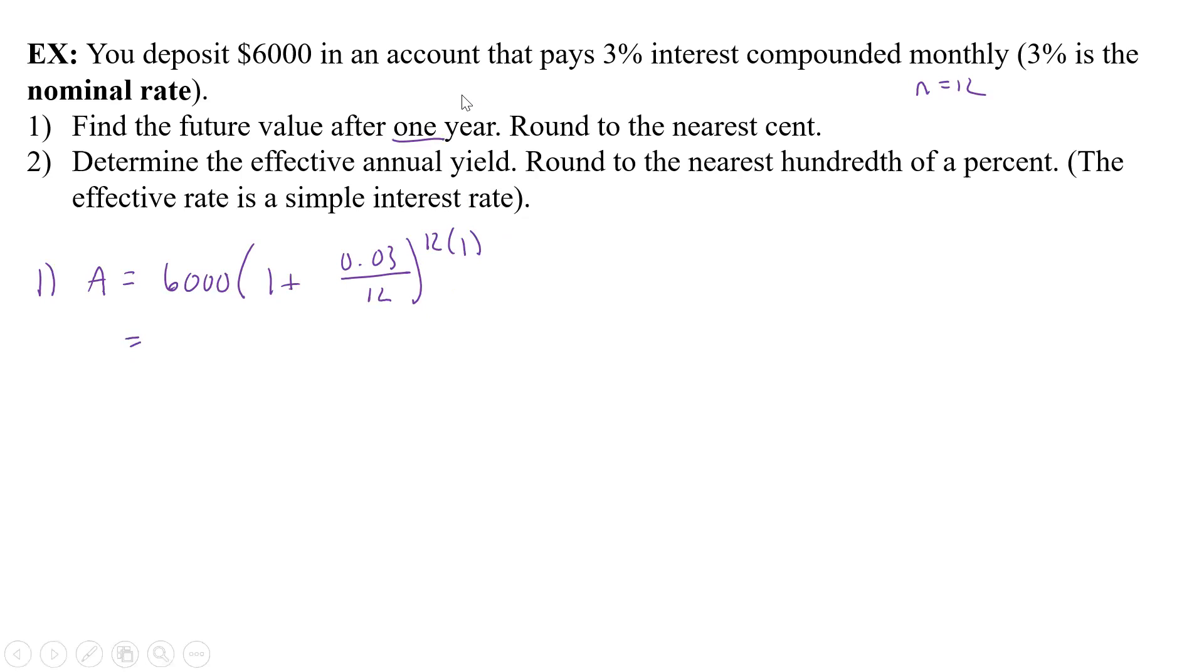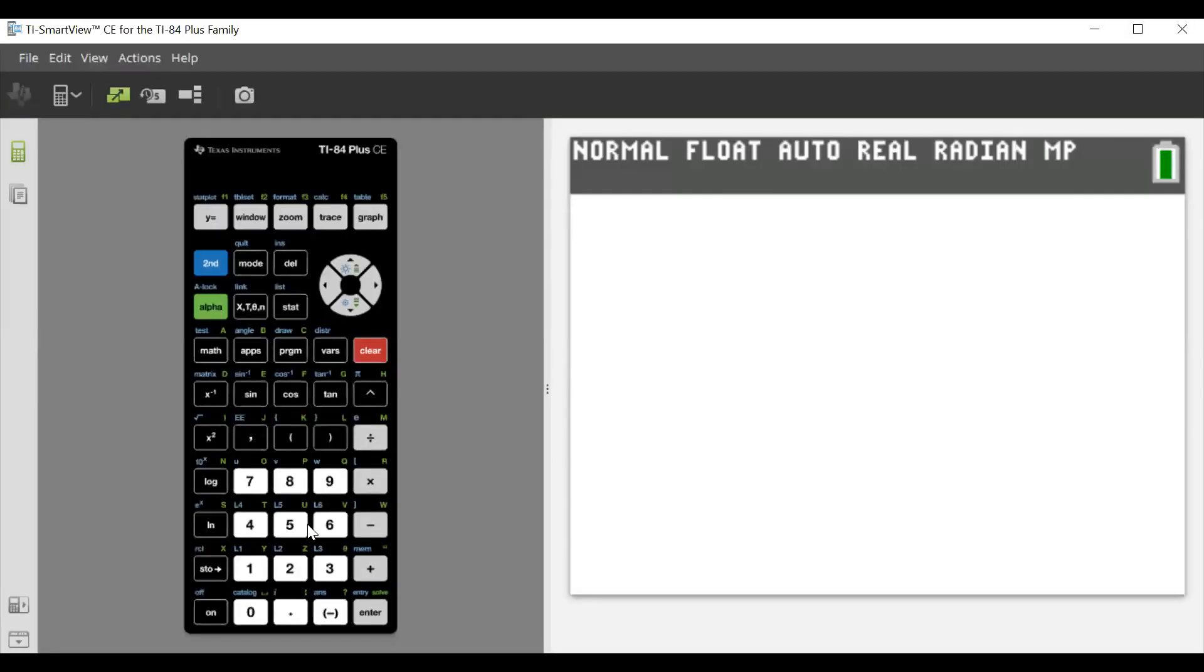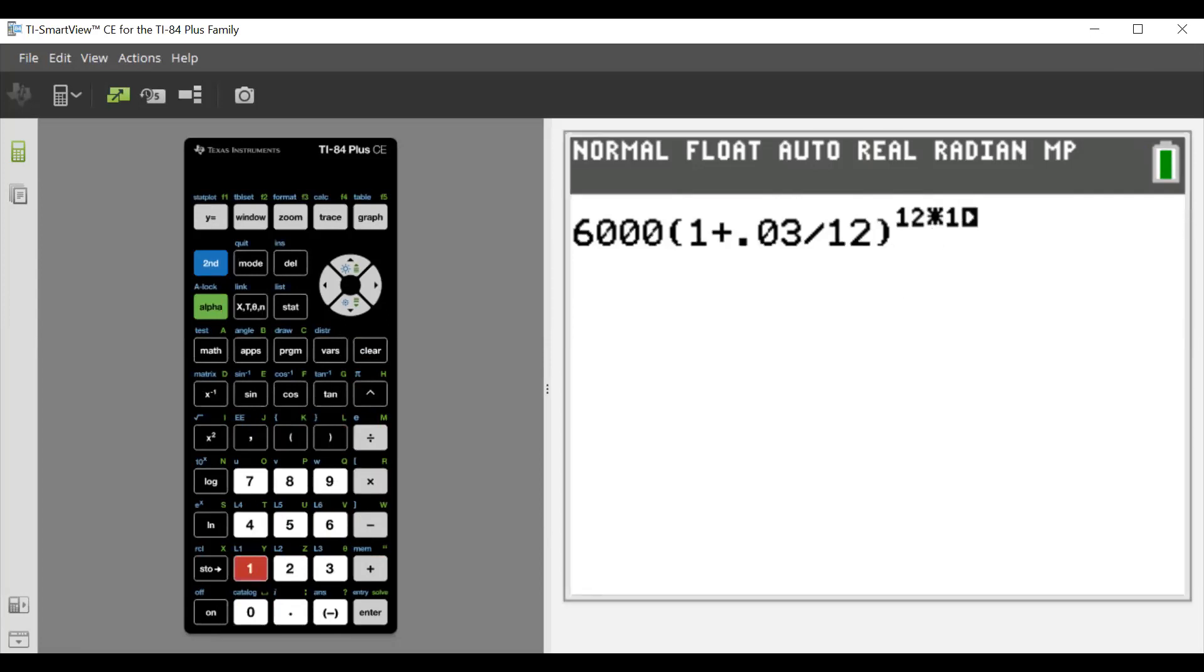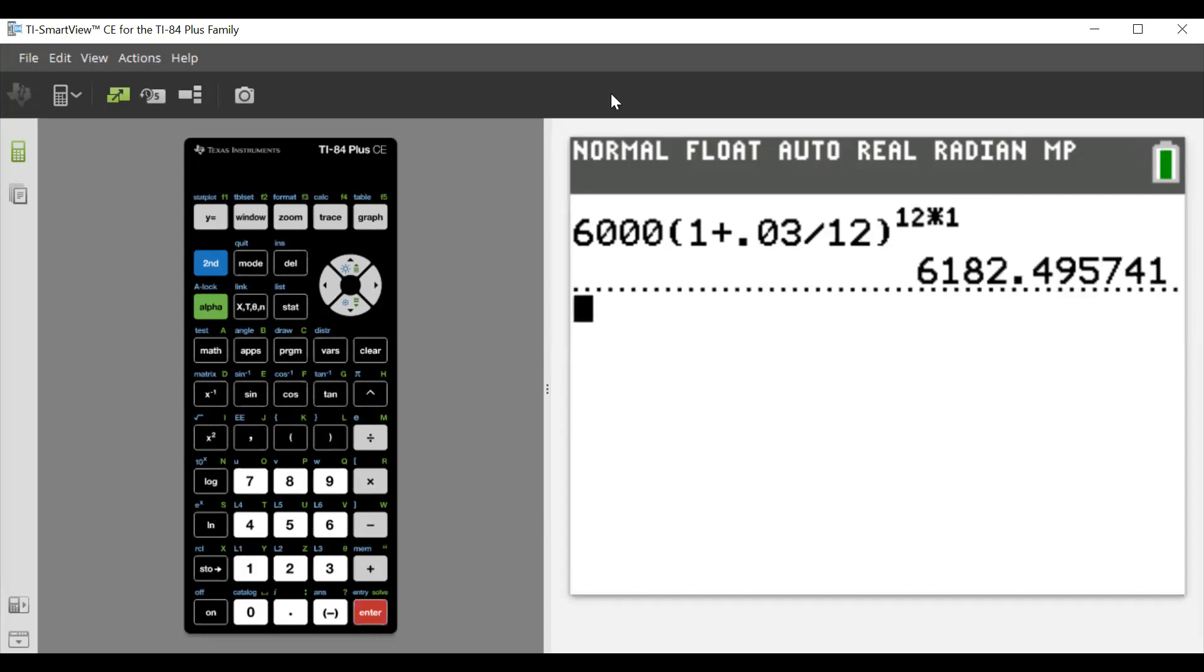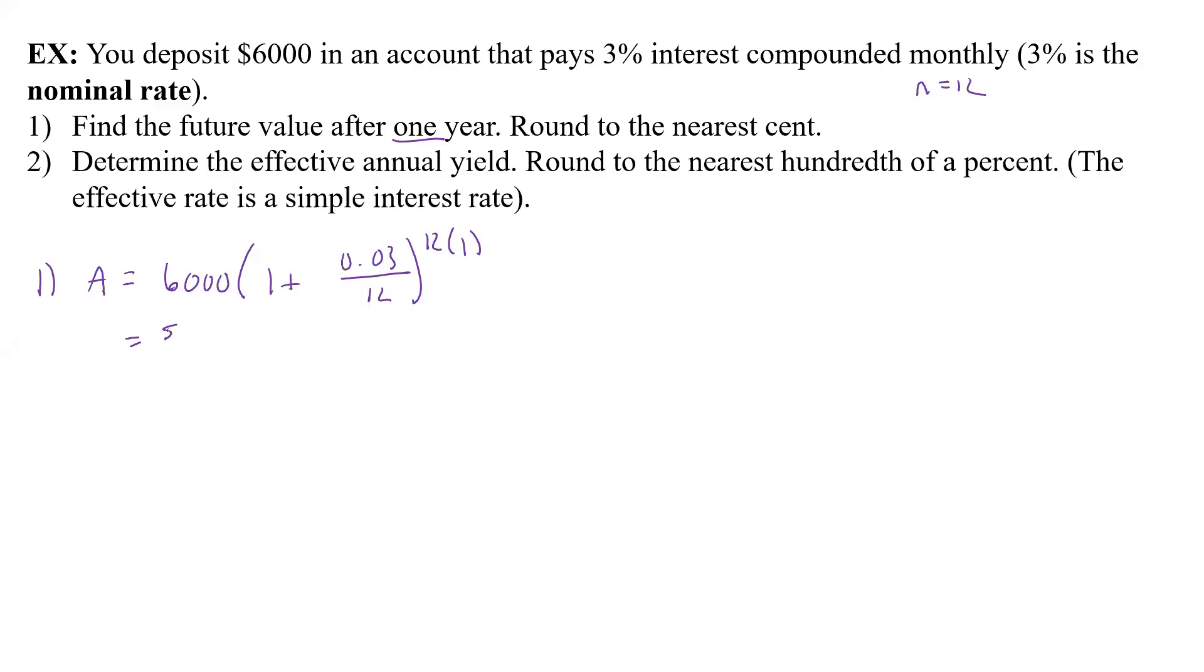So we're going to calculate that. We have 6,000 times 1 plus 0.03 divided by 12, in parentheses, raised to the power of 12 times 1. We're just going to put that even though we know it's just 12. And we get $6,182.50, rounding that up.